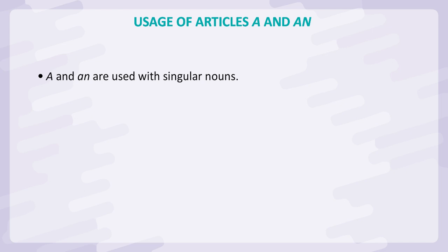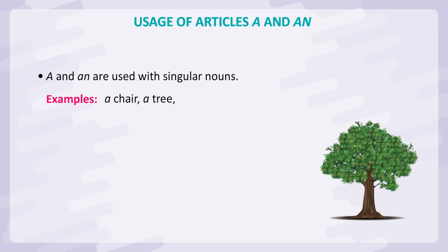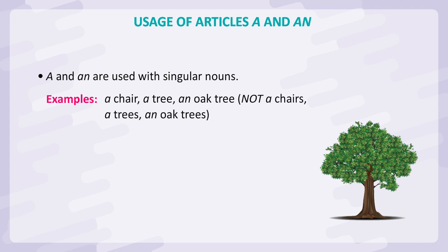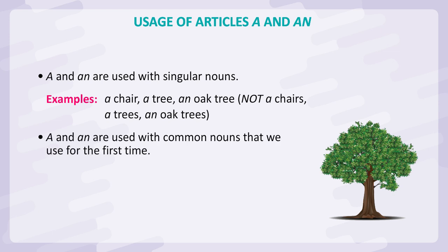A and an are used with singular nouns. Examples: a chair, a tree, an oak tree — not a chairs, a trees, or an oak trees. A and an are used with common nouns that we use for the first time.